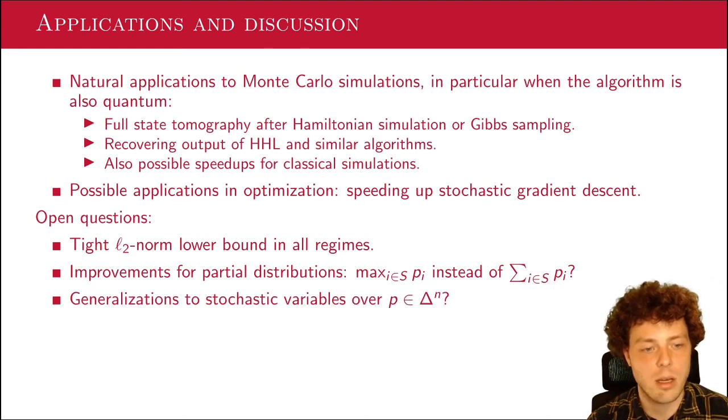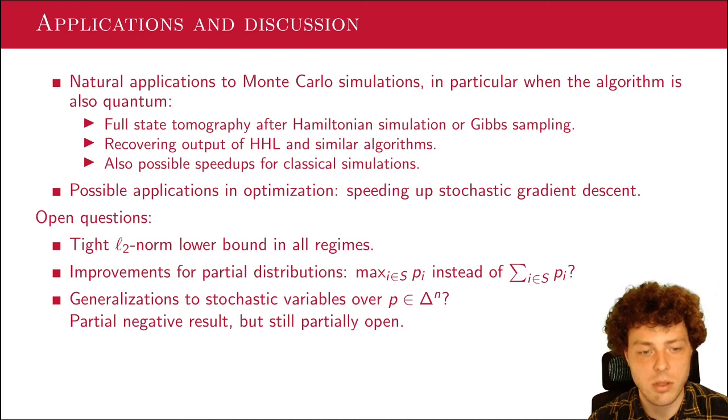And then finally, can we generalize this to stochastic variables? So the classical algorithm very easily generalizes to just estimating expectation values of some random processes, some stochastic variables, as long as they all come from the same distribution. But can we actually do this quantumly as well? And sadly, there's some partially negative results that we proved here, but they're still also partially open. So we have some lower bounds in general, but there are some regimes in which there might be some improvements actually. And this would make it more generally applicable and also relates to the problem of shadow tomography, which was introduced by Scott Aaronson, which asks you to estimate a lot of observables over the same quantum state. So this is sort of the classical version of that. We have a lot of stochastic variables over the same probability distribution, and we want to estimate all of them.